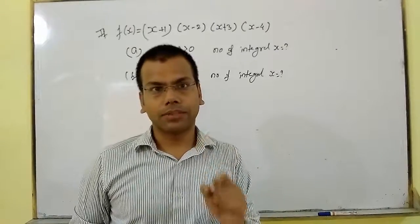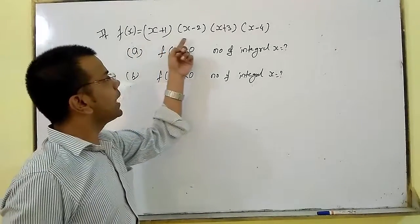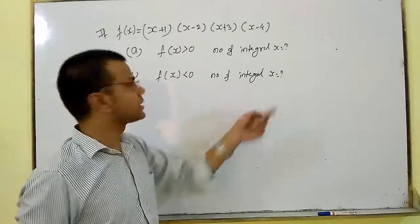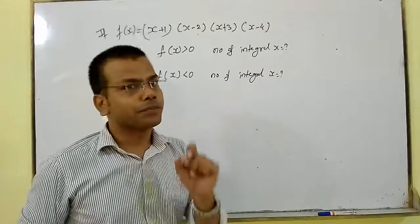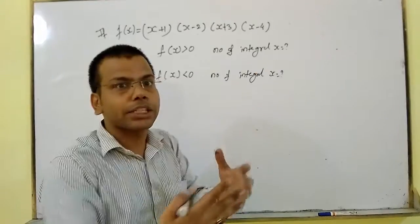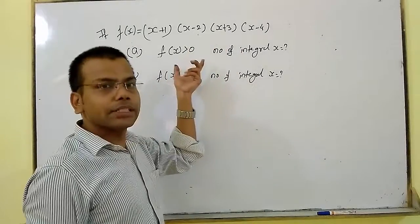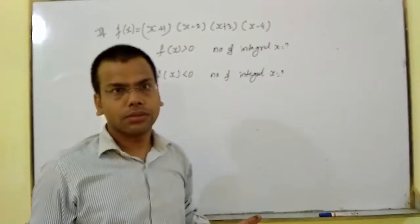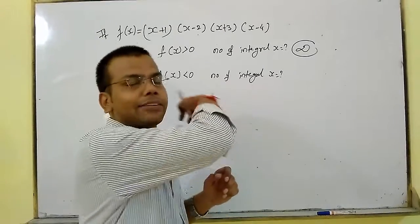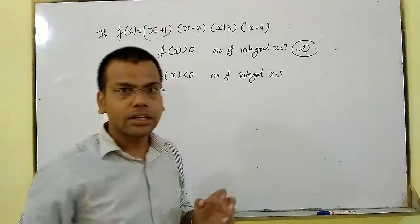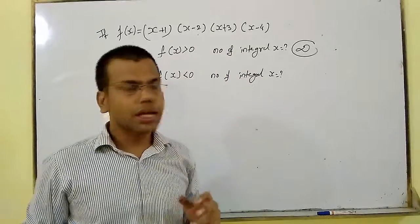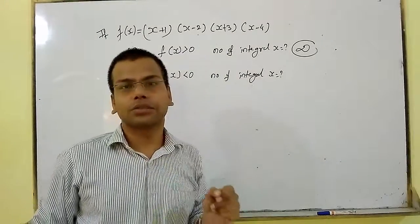Now let's understand the concept with a practice question. We have fx = (x + 1)(x - 2)(x + 3)(x - 4). For how many integral x is fx positive, and for how many integral x is fx negative? First, we check the product of all x coefficients: positive × positive × positive × positive = positive, meaning x raised to power 4 is positive. So fx > 0 has infinite solutions. There are four roots, and we are looking for fx negative, so we have finite solutions.